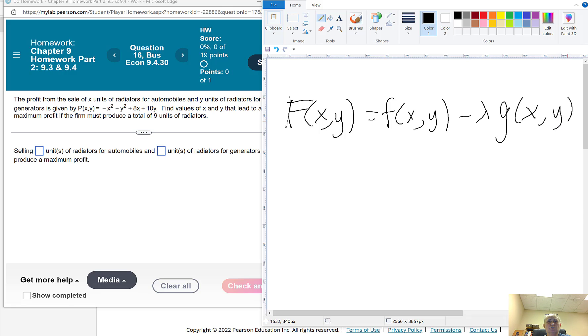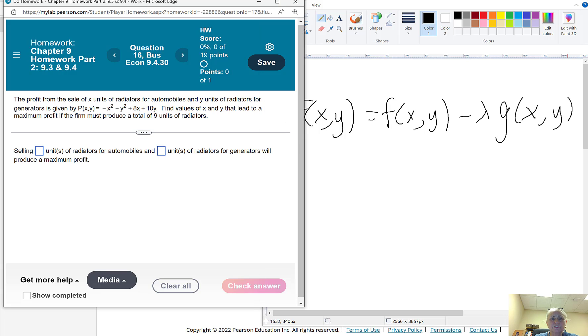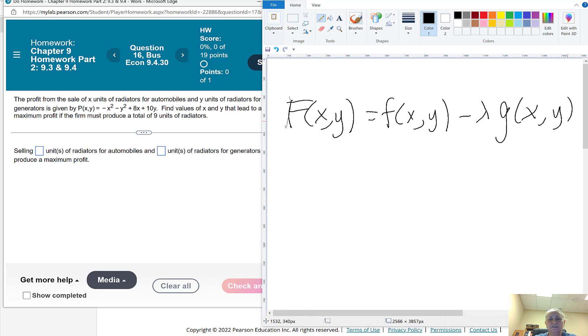Now this time they don't give us our exact constraint. We have to formulate it ourselves. It's from the second sentence. Find values of x and y that lead to a maximum profit if they must produce a total of 9 units. So x plus y has to equal 9. So our constraint formula equal to 0 is x plus y minus 9 equals 0.